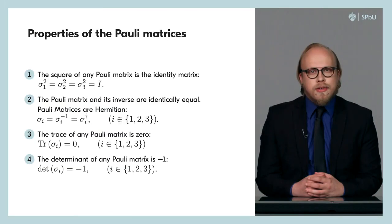Let's consider the algebraic properties of Pauli matrices. The first property: the square of an arbitrary Pauli matrix is equal to the identity matrix. This is easily verified using the explicit form of these matrices. The second property: for each Pauli matrix, the inverse matrix turned out to be identically equal to it. In fact, this is the consequence of the first property.